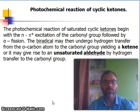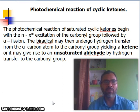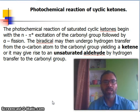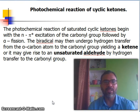The bi-radical may then undergo hydrogen transfer from the alpha carbon atom to the carbonyl group, yielding a ketene, or it may give rise to an unsaturated aldehyde by hydrogen transfer to the carbonyl group.